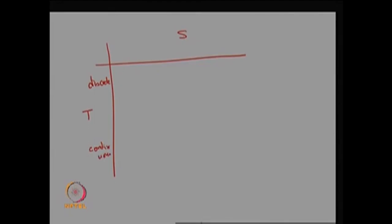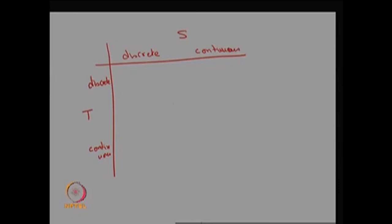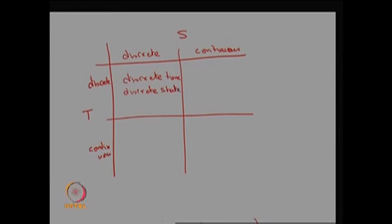Similarly, if the possible values of S are countably finite or countably infinite, the state space is discrete. If uncountably many, it is continuous. Accordingly, we classify the stochastic process into four types. If T is discrete and S is discrete, it is called a discrete-time discrete-state stochastic process.